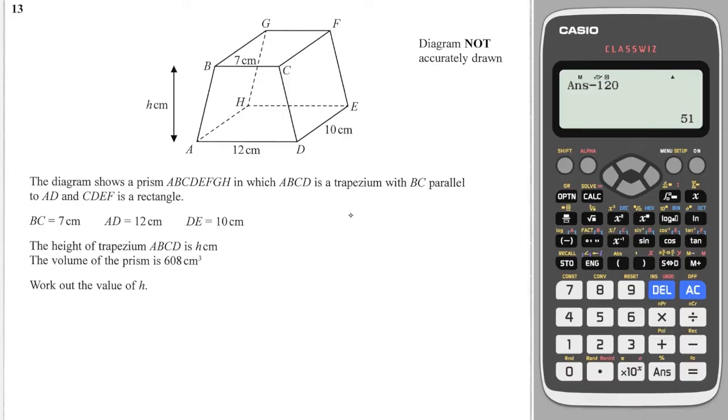Next question. We have a trapezium. And we know the volume is equal to 608. So let's work out the area of the trapezium, which is the cross section. So it's a half of A plus B multiplied by H, where A and B are the two parallel sides. So it's a half 7 plus 12 multiplied by H, which we don't know yet. And the volume of the shape will be that cross sectional area, which is the trapezium, times by how far back it goes, which is 10. So the volume is a half multiplied by 7 plus 12, times by H, times by 10. And that is equal to 608.